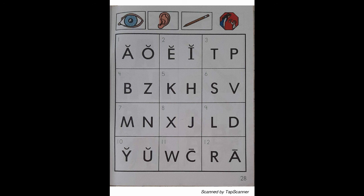Look at the letter in box 4. Listen as I say the sound of the letter: "B" — Buffalo — "B". With your pencil, circle the letter that reads "B".